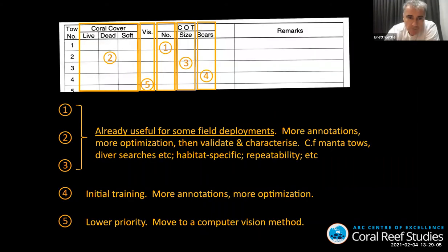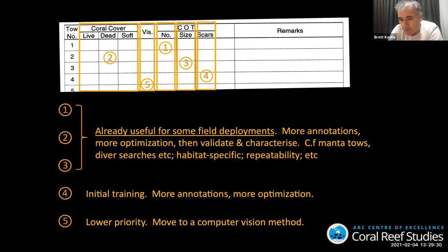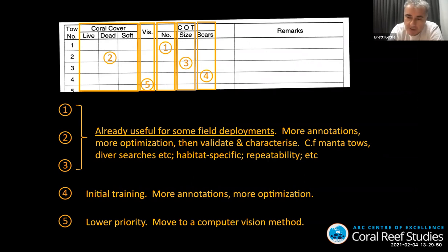Where are we at and what are we doing going forward? With respect to the standard things collected in COTS manta towing, we already have things working usefully enough that when we go back into the field, some of these will be embedded. Every one of them needs more annotations, particularly to deal with generalisation from one environment to another and one type of reef to another. Then optimisation, validation, and quite detailed work to validate and characterise the glider's performance relative to manta tow and diver search techniques, and to look at whether those characterisations are habitat-specific and the repeatability of the method.